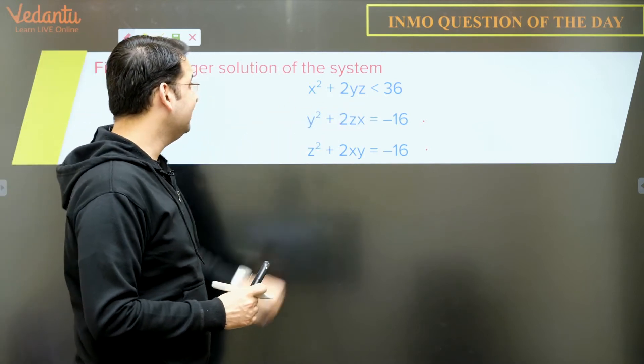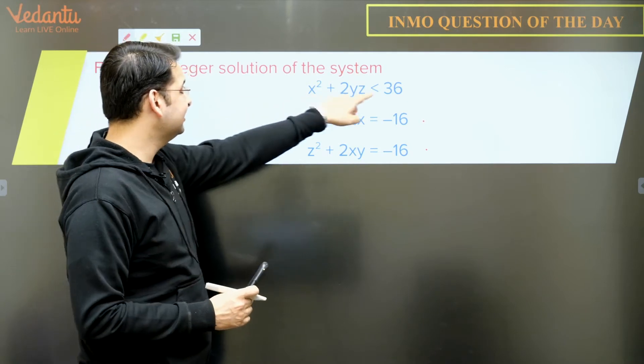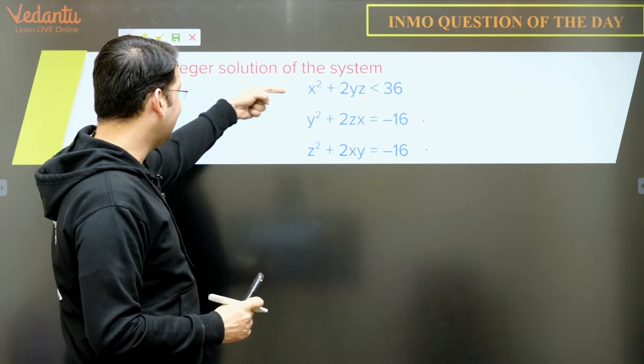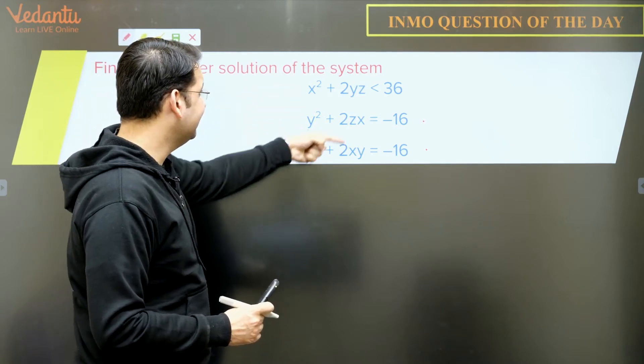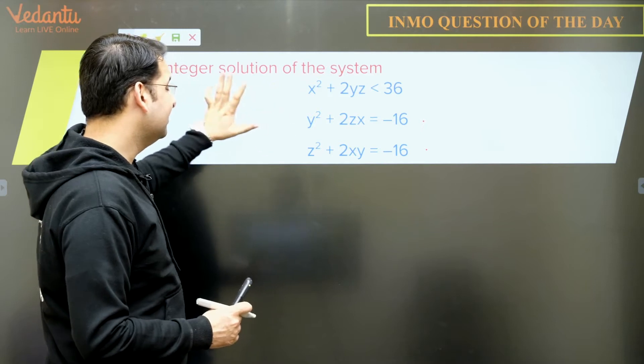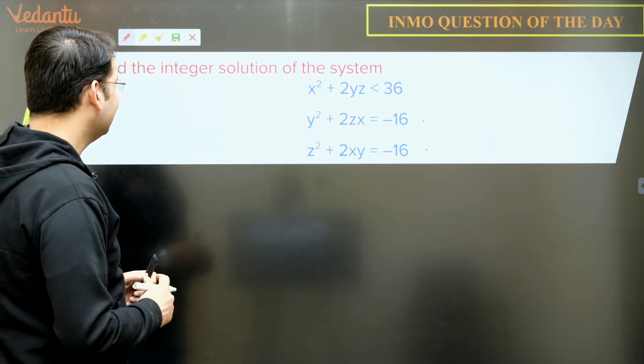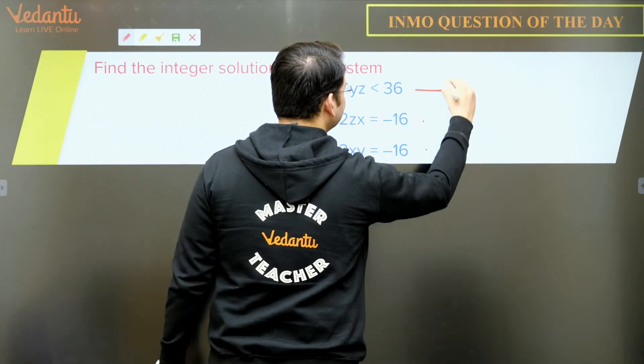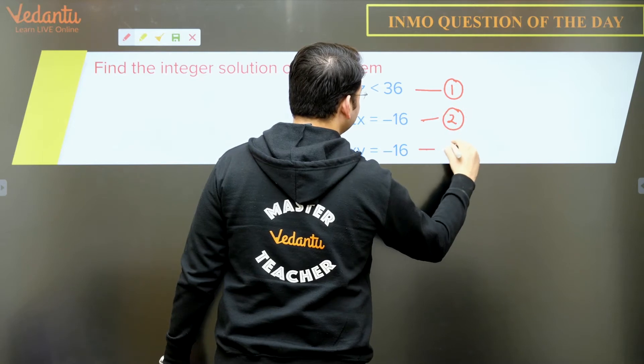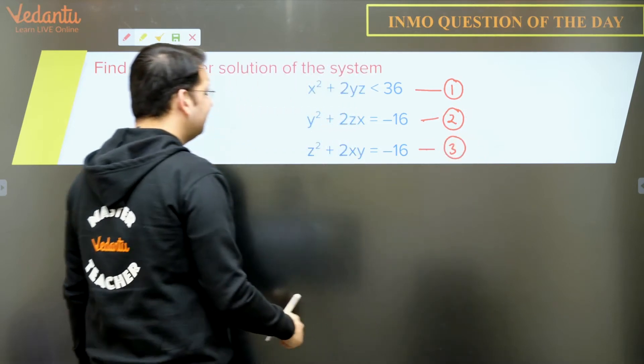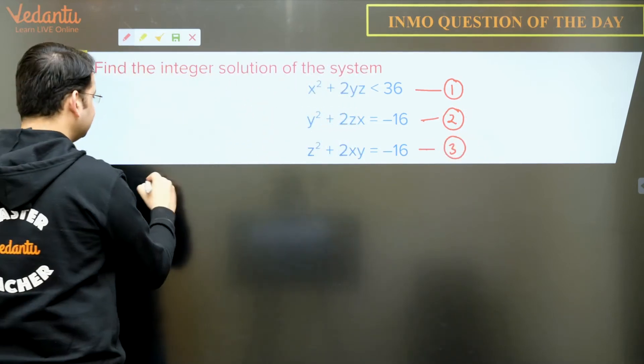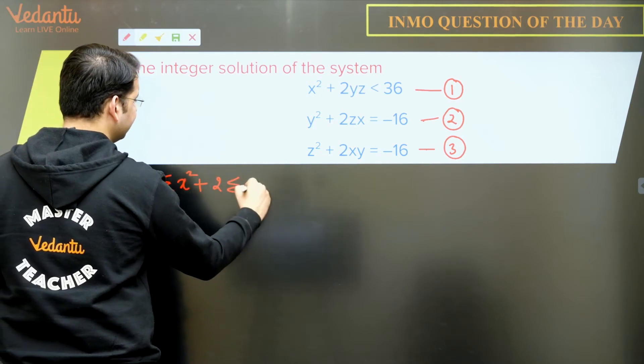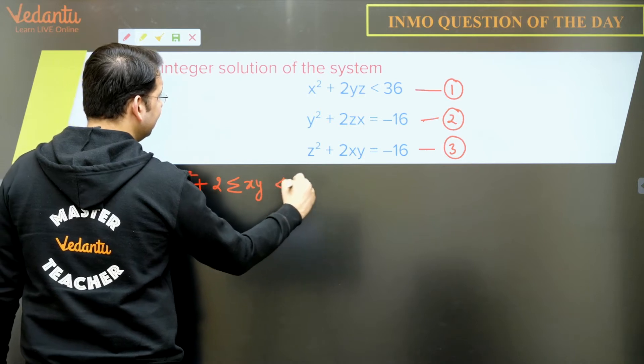Alright guys, now so what do we have is, we can see some good things. We have -16 and -16 on the right hand side of the later two equations. And the first is an equation which is less than 36. Moreover, we also know that if we add these three up, we'll form a very good identity. So let us mark these equations as 1 and this be 2 and this be 3. So first of all, let us add all the three up.